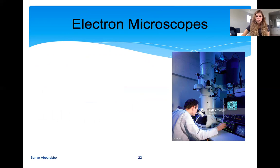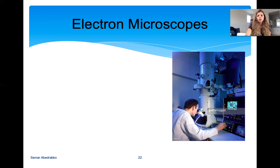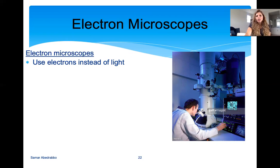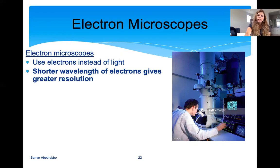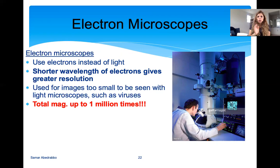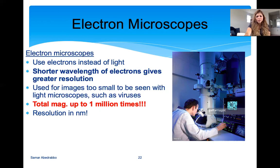Now we're going to talk about electron microscopes. So far everything covered has been the light microscope — bright field, dark field, and fluorescent light microscopes. With light microscopes we can see things that are micrometers in size. If we're trying to study organisms smaller than that, such as viruses that are measured in nanometers, you need electron microscopes. Electron microscopes use electrons instead of light, and because electrons have a very short wavelength, you get a much higher resolution and can see very small things like viruses. You can get total magnification of up to a million times with electron microscopes.